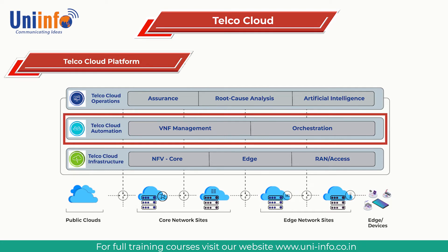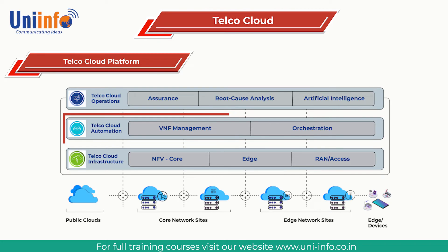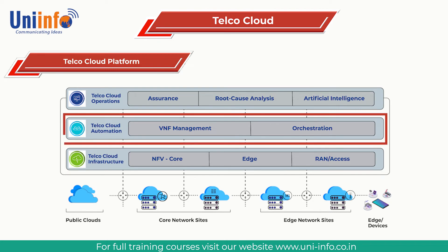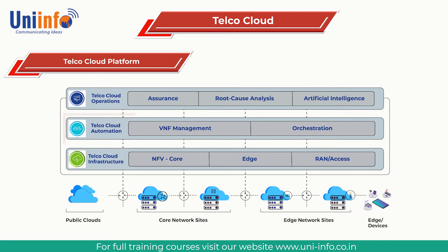Cloud Automation: This tier provides a service management and control function which bridges the virtual resource orchestration and physical functions to deliver services and service chains, including operation support systems and business support systems. It is typically a centralized control and management function including embedded automation and optimization capabilities.